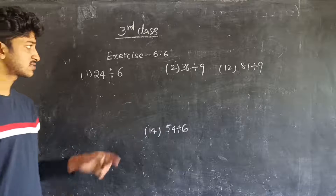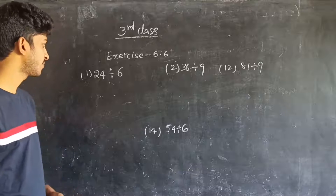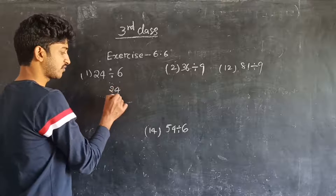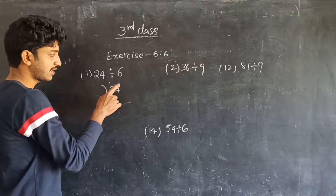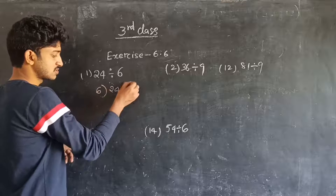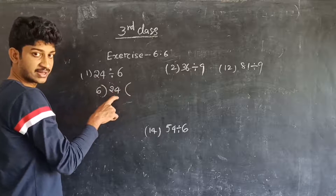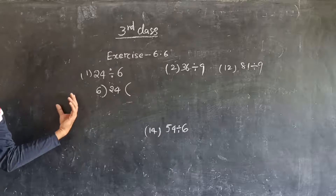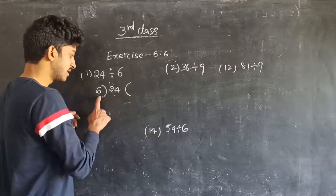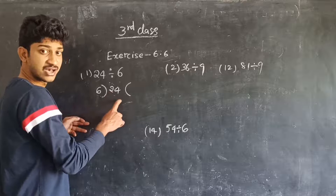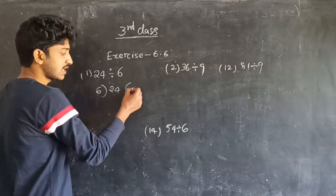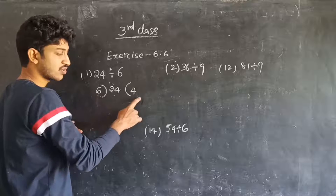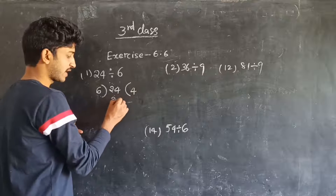See here in Exercise 6.6, the first problem: 24 divided by 6. Take the dividend 24 at the center. 24 is the dividend and 6 is the divisor. Take the dividend at the center, and on the left side of the dividend we have to write the divisor. In the 6 times table, 24 comes exactly 4 times.